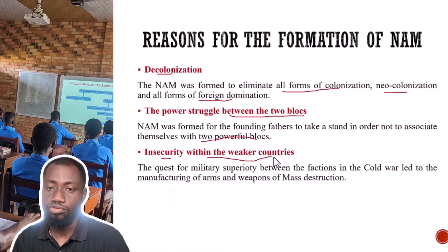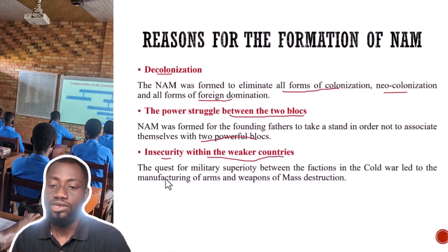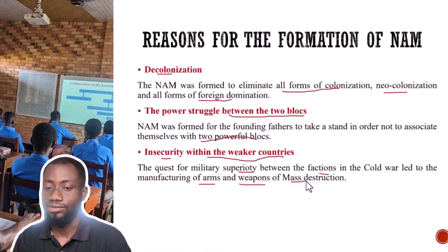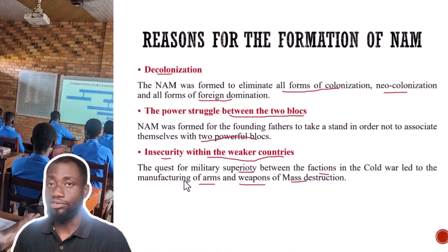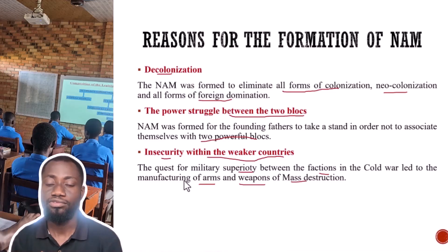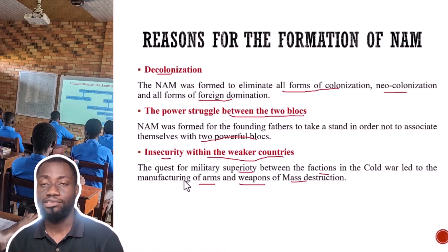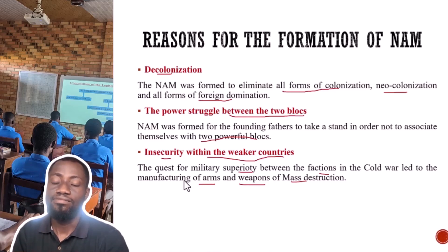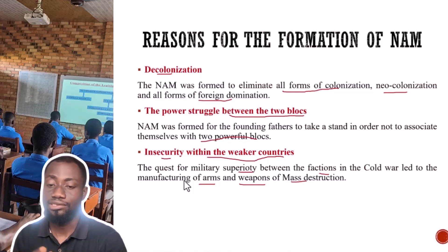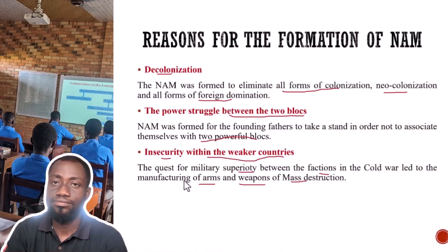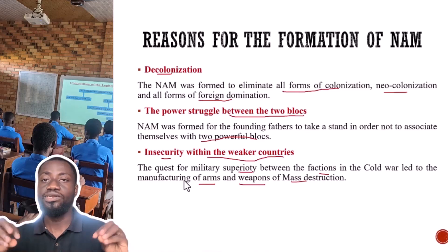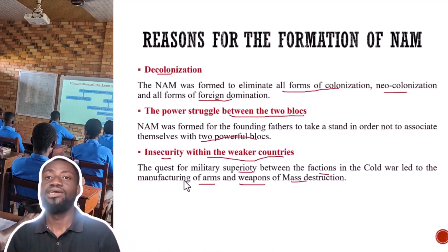Insecurity within the weaker countries was also a reason for the formation of NAM. The quest for military superiority between the factions in the Cold War led to the manufacturing of arms and weapons of mass destruction. These developing countries felt insecure because the superpowers were manufacturing nuclear weapons. The developing countries didn't have the power to manufacture such weapons, so they didn't want to take any sides — if two elephants are fighting, staying neutral means they won't come and attack you.